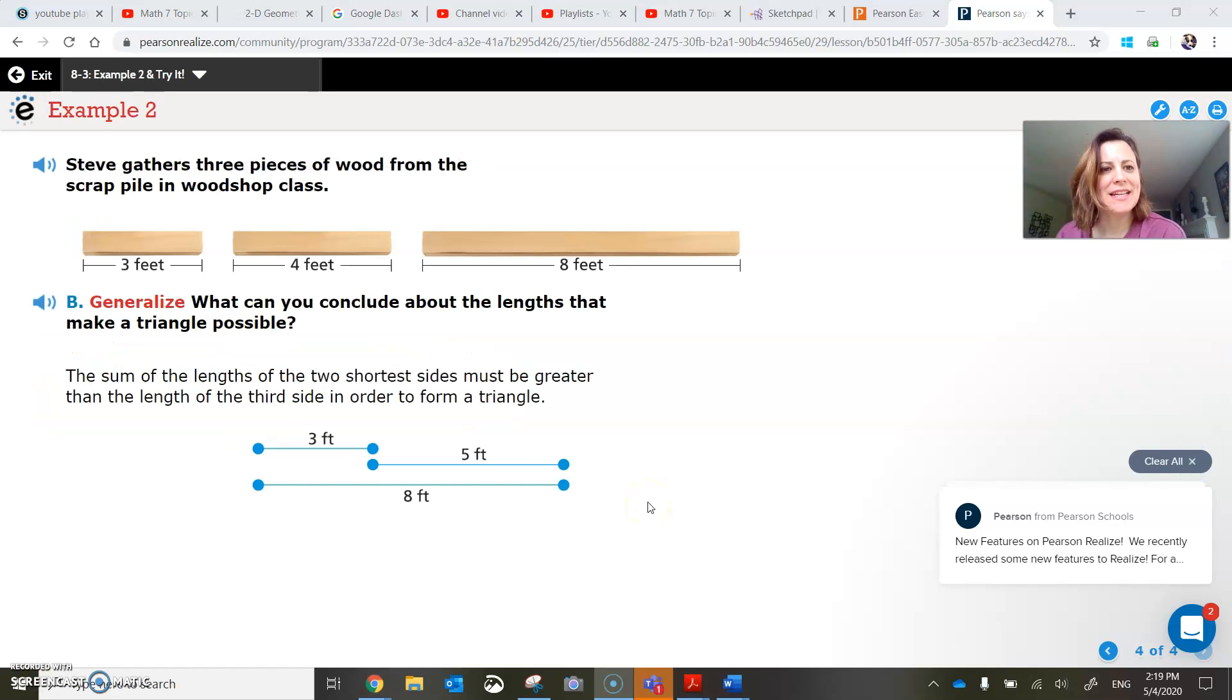Well example two doesn't have a triad. The big idea here is if you think about building a triangle out of three different pens or something, if you took the longest one and put it down, the other two, when you tip them in toward each other to make that triangle, if they're too far apart, they'll just fall flat. So the idea is that the two short sides of the triangle have to be longer than the longest side if you add them up.